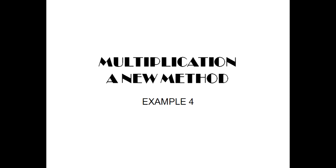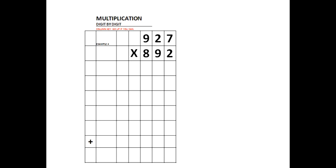Our fourth example will be a 3-digit number times a 3-digit number. Our problem is to do 2 times 927, 9 times 927, and 8 times 927. If we know where to start the individual products, the problem is relatively simple. When we start with the 2, we start in the 1's column. When we multiply by the 9, we start in the 10's column. And when we multiply by 8, we start in the 100's column.